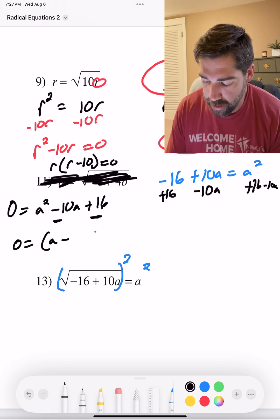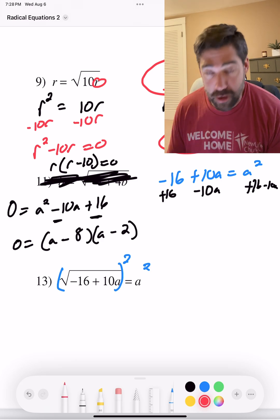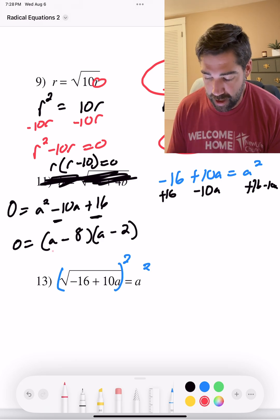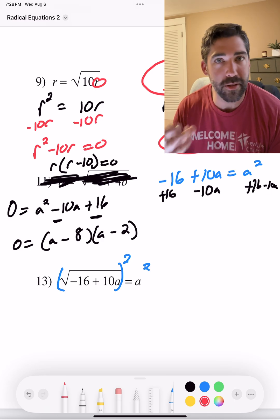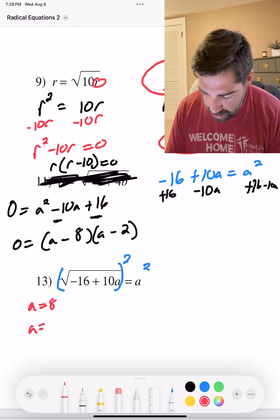this is me factoring, a minus something, a minus something. Eight times two is 16. Two and eight together equal 10. You know, it's just the opposite, right? It's just a equals eight and a equals two. You could just boom, make it real quick. So we have possible solutions as a equals eight and a equals two.